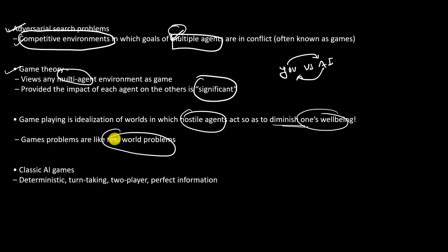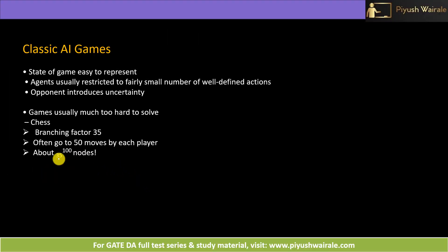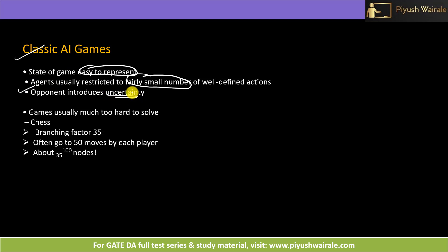Games problems are like real-world problems. Classic AI games should be deterministic, turn-taking, two-player, and have perfect information. Classic AI games are easy to represent and agents are usually restricted to a fairly small number of actions. In tic-tac-toe we have a very limited number of actions. The opponent introduces uncertainty because our movement depends on the opponent's move. Games can be very hard to solve — chess, for example, has a branching factor of 30 and can go to 50 moves per player, giving about 35 to the power of 100 nodes, making it very complicated to find the optimal algorithm.